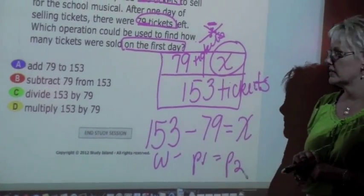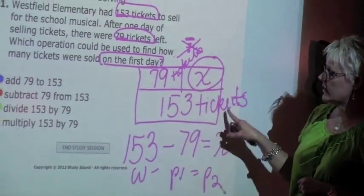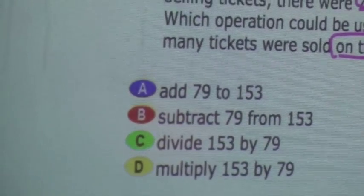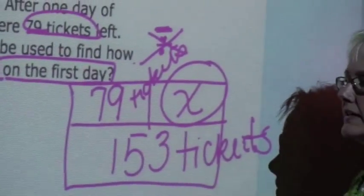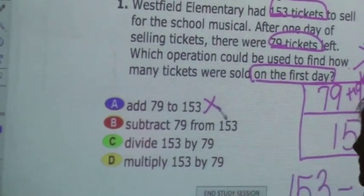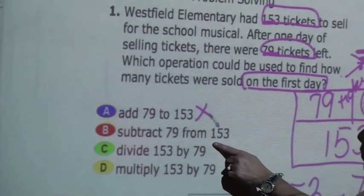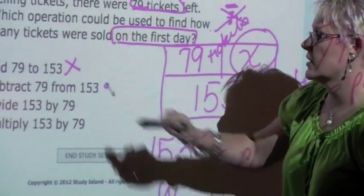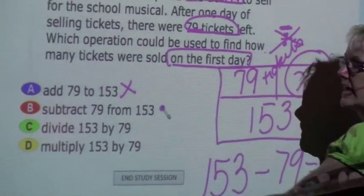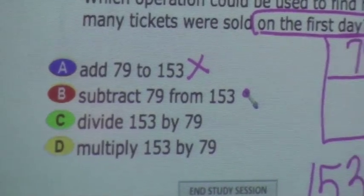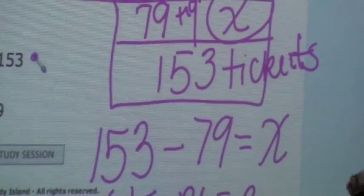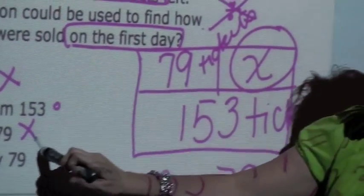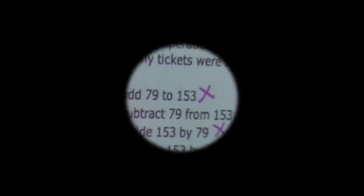Now let's look at the answer choices. Choice A says to add 79 to 153 — we did not do any addition, we did subtraction, so that's incorrect. Choice B says to subtract 79 from 153 — that matches our operation, so we mark that as a possibility. Choice C says to divide 153 by 79 — we did not divide; that was an incorrect operation in a part-part-whole setup. Choice D asks us to multiply, and we did no multiplication here. So the only possible answer is B, and that is the correct answer.